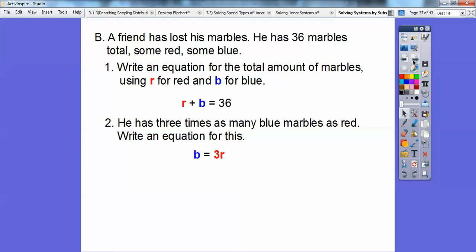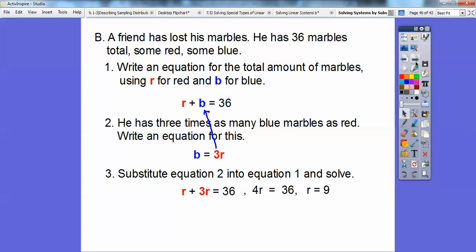And then, so there's that equation right there, and then we're going to go ahead and substitute this equation, equation two, to equation one. So I'm going to put this 3r right there, and then we're going to go ahead and solve. So there it is right there, r plus now 3r equals 36. Combine the like terms, r plus 3r is 4r, so 4r equals 36, and 4 goes into 36 nine times. And then we're going to plug in nine right here for r to get b, because we've got to figure out how many blue marbles he had. So b equals three times r, which is three times nine, which is 27.